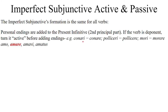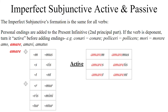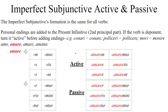So for conor, conari, conatus sum — take the infinitive conari, make it look active: conare, and then add the personal endings. So polliceri becomes pollicerre, and mori becomes morere. For amo, amare, amavi, amatus — take the present active infinitive amare, the second principal part, and add personal endings: -em, -es, -et, -mus, -tis, -unt — and you get: amarem, amares, amaret, amaremus, amaretis, amarent. For the passive, just add passive voice personal endings: amarer, amareres, amaretur, amaremur, amaremini, amarentur.